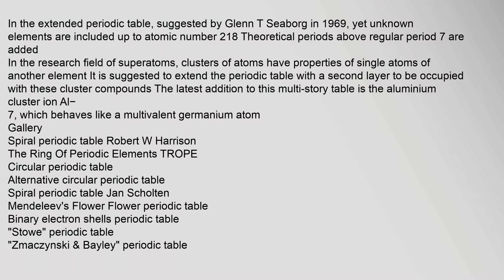Extension of the periodic table: In the extended periodic table suggested by Glenn T. Seaborg in 1969, yet-unknown elements are included up to atomic number 218. Theoretical periods above regular period 7 are added in the research field of superatoms — clusters of atoms that have properties of single atoms of another element. It is suggested to extend the periodic table with a second layer to be occupied with these cluster compounds. The latest addition is the aluminium cluster ion Al-7, which behaves like a multivalent germanium atom.